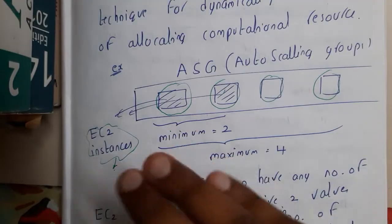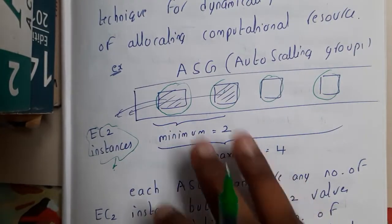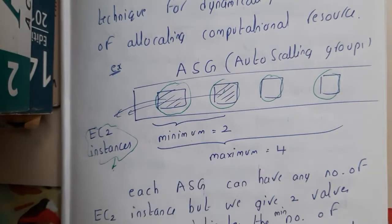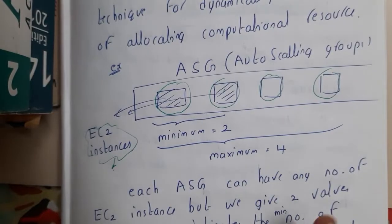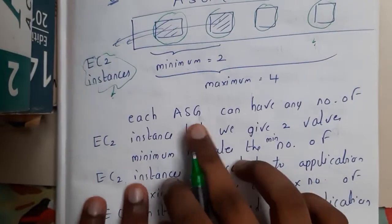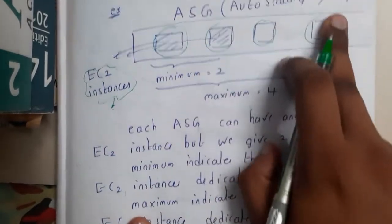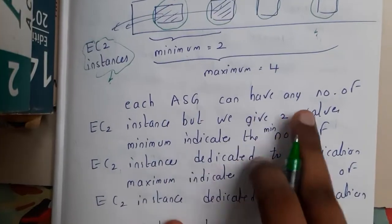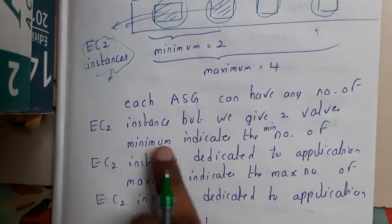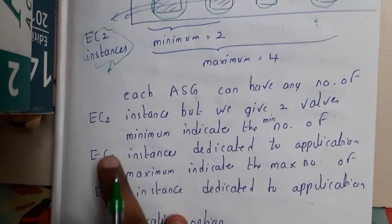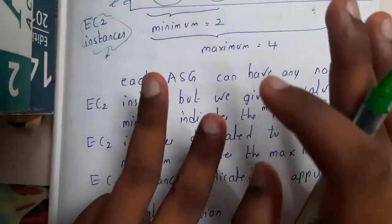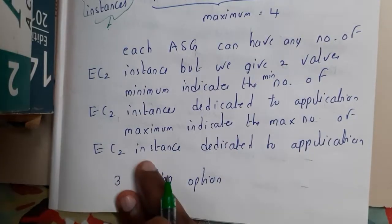Based on the load of traffic, EC2 instances will be automatically enabled and disabled as required. This is auto scaling — done dynamically, not manually or at a fixed setting. There are three types, which we will discuss. Each Auto Scaling Group (ASG) can have any number of EC2 instances, with two key values: minimum and maximum. Minimum indicates the minimum number of EC2 instances dedicated to the application.